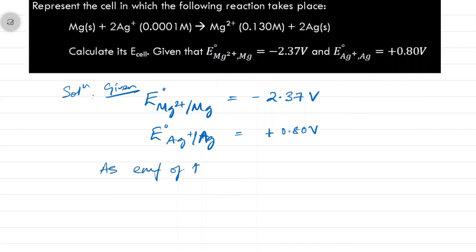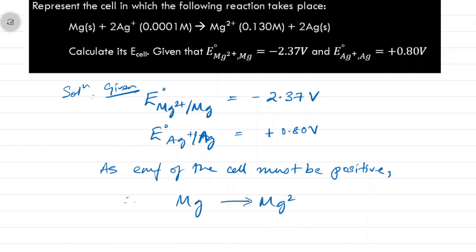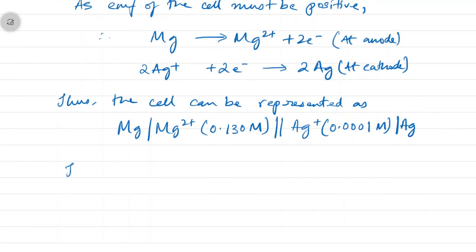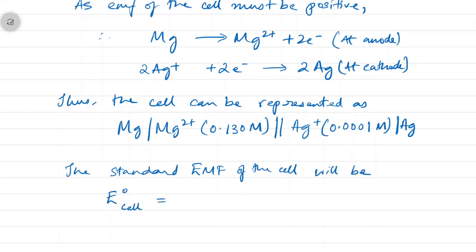Since the EMF of the cell must be positive, oxidation takes place at the magnesium electrode. The electrode reactions can be written accordingly, and the cell can be represented in standard cell notation. The standard EMF of the cell is calculated to be 3.17 V.